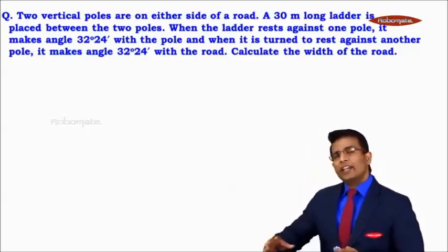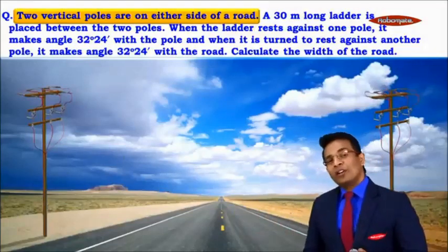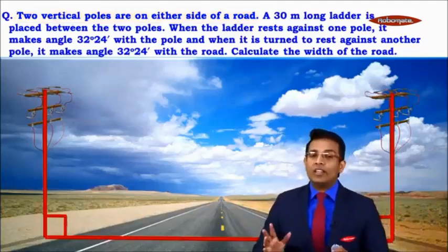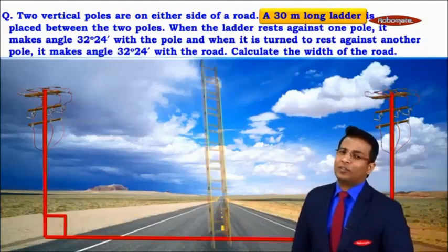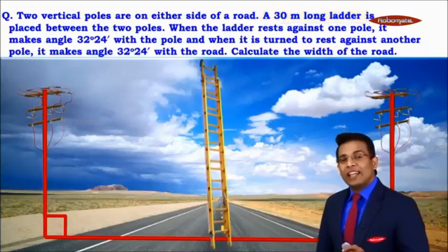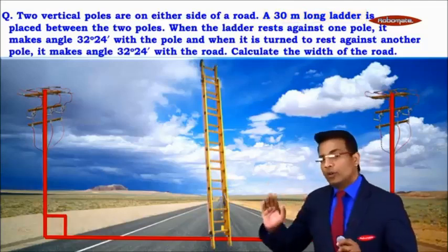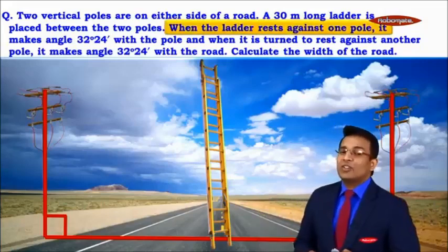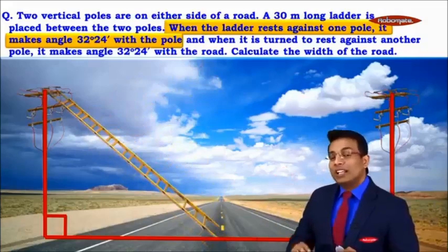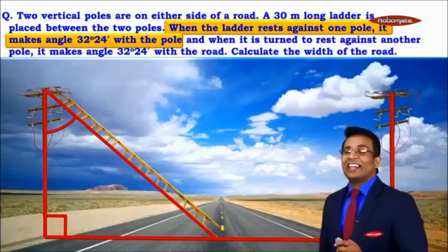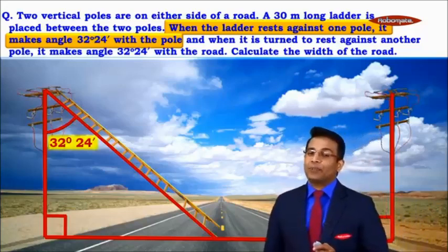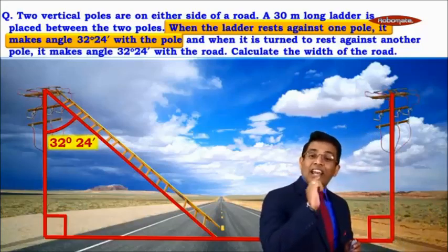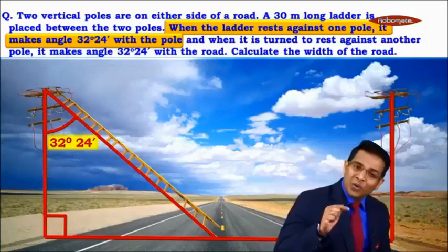Let's understand what we're supposed to find. Two vertical poles are on either side of a road. We have a 30-meter long ladder placed between them. When the ladder rests against one pole, the angle made by the ladder with that pole is 32 degrees 24 minutes. When it is turned to rest against the other pole, it makes 32 degrees 24 minutes with the road.